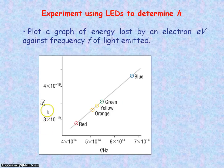We can plot a graph of the energy lost by the electron, which is the charge of the electron multiplied by the voltage. This energy will need to be in joules, and that will be against the frequency of the light emitted.